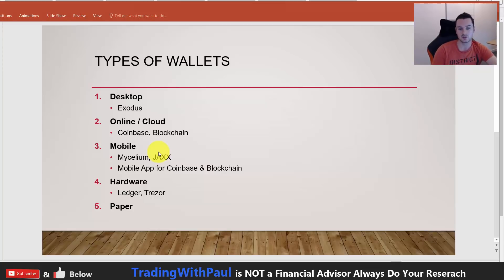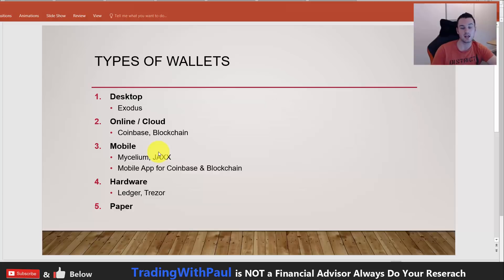Just to clarify — some people think the actual currency is stored on their phone or device. What these wallets actually do is hold the keys to unlock your coins on the blockchain. Everything is stored on the blockchain, and any of these wallets are your way to unlock your coins. The coins aren't actually stored within the wallet; the wallets hold the keys that let you access them.